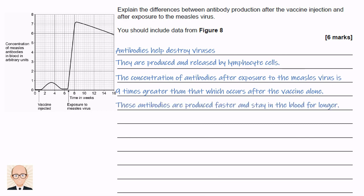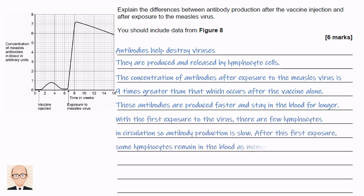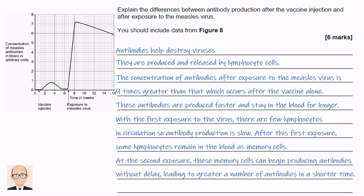Then give a reason: these antibodies are produced faster and stay in the blood for longer. Expand by describing the primary response: with the first exposure to the virus, there are few lymphocytes in circulation, so antibody production is slow. After this first exposure, some lymphocytes remain in the blood as memory cells. At the second exposure, these memory cells can begin producing antibodies without delay, leading to a greater number of antibodies in a shorter time.